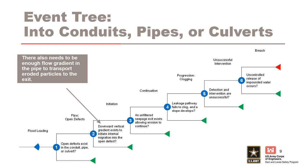Node 2 is the initiation node. A downward gradient exists to initiate internal migration, and there also has to be enough water flow in the pipes to transport the eroded particles. Node 3 is the continuation node: an unfiltered exit exists that allows erosion to continue. Node 4 is the progression node: the leakage fails to clog and a stope develops. The common progression node of holding a roof applies to concentrated leak erosion and is not evaluated for this internal erosion process.